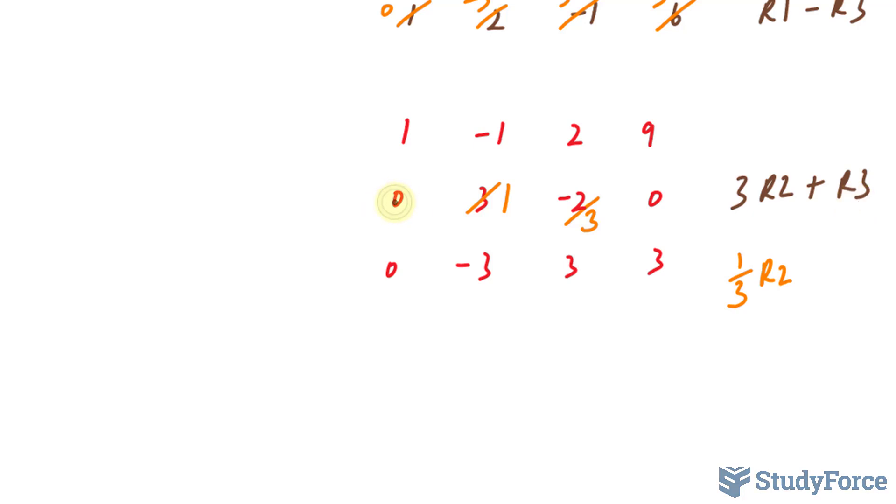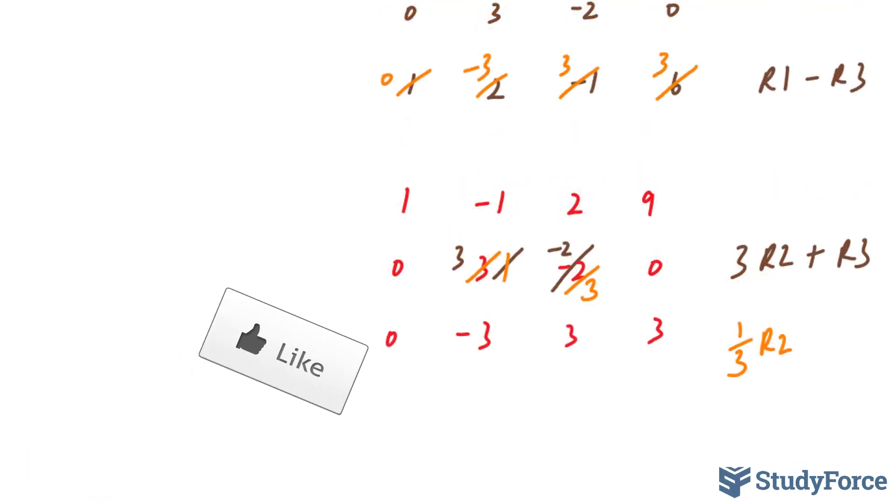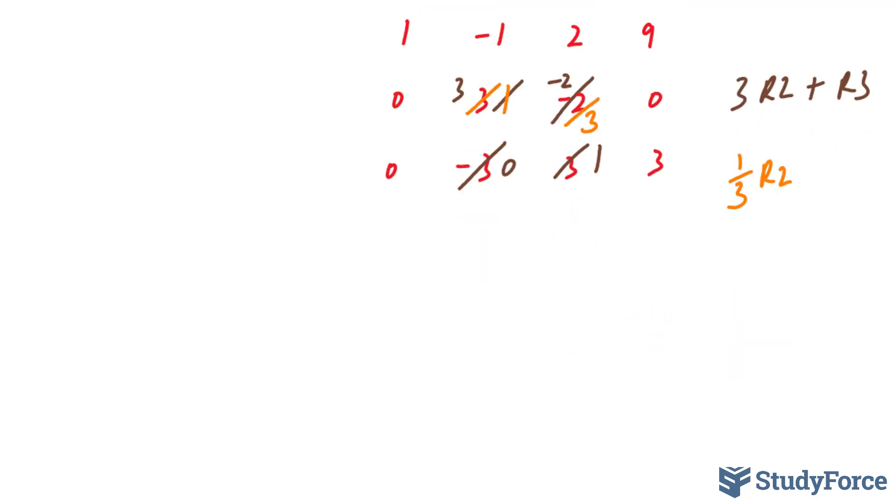So multiplying this by 3 remains 0. Multiplying this by 3 gives us positive 3. Multiplying this by 3 gives us negative 2, and this remains as 0. Now, we add 3 and negative 3. That is equal to 0, exactly what we want. Negative 2 plus 3 is positive 1, and 0 plus 3 is 3. So your matrix should look like this.